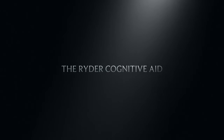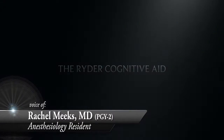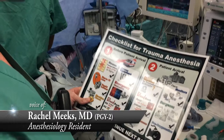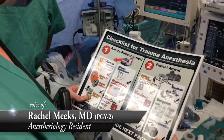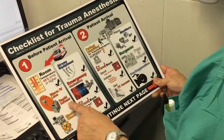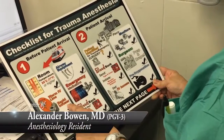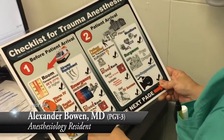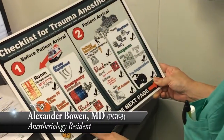The cognitive aid checklist for trauma anesthesia is a letter-sized, full-color document consisting of two separate pages. The first page is organized in two major sections, numbered one and two.